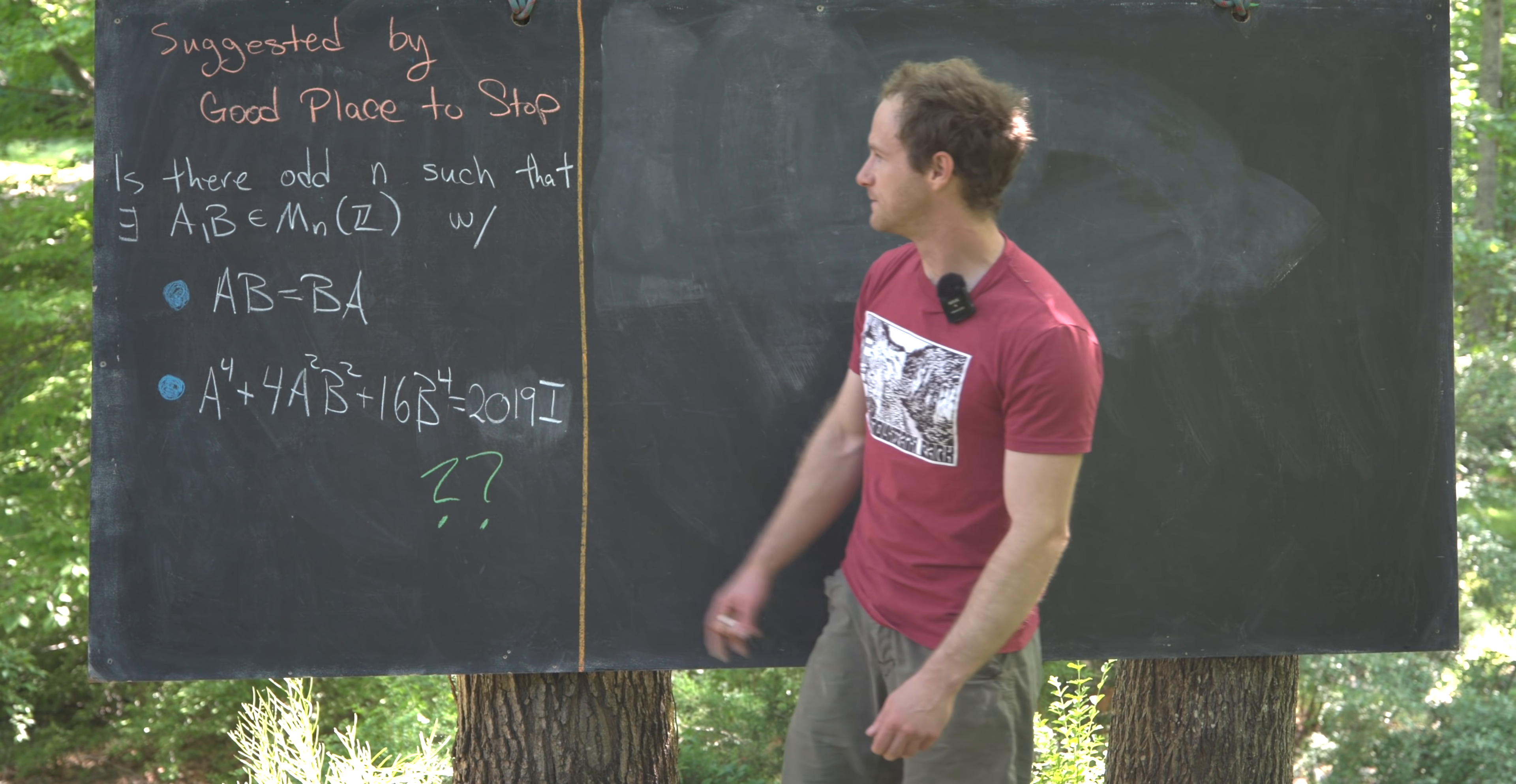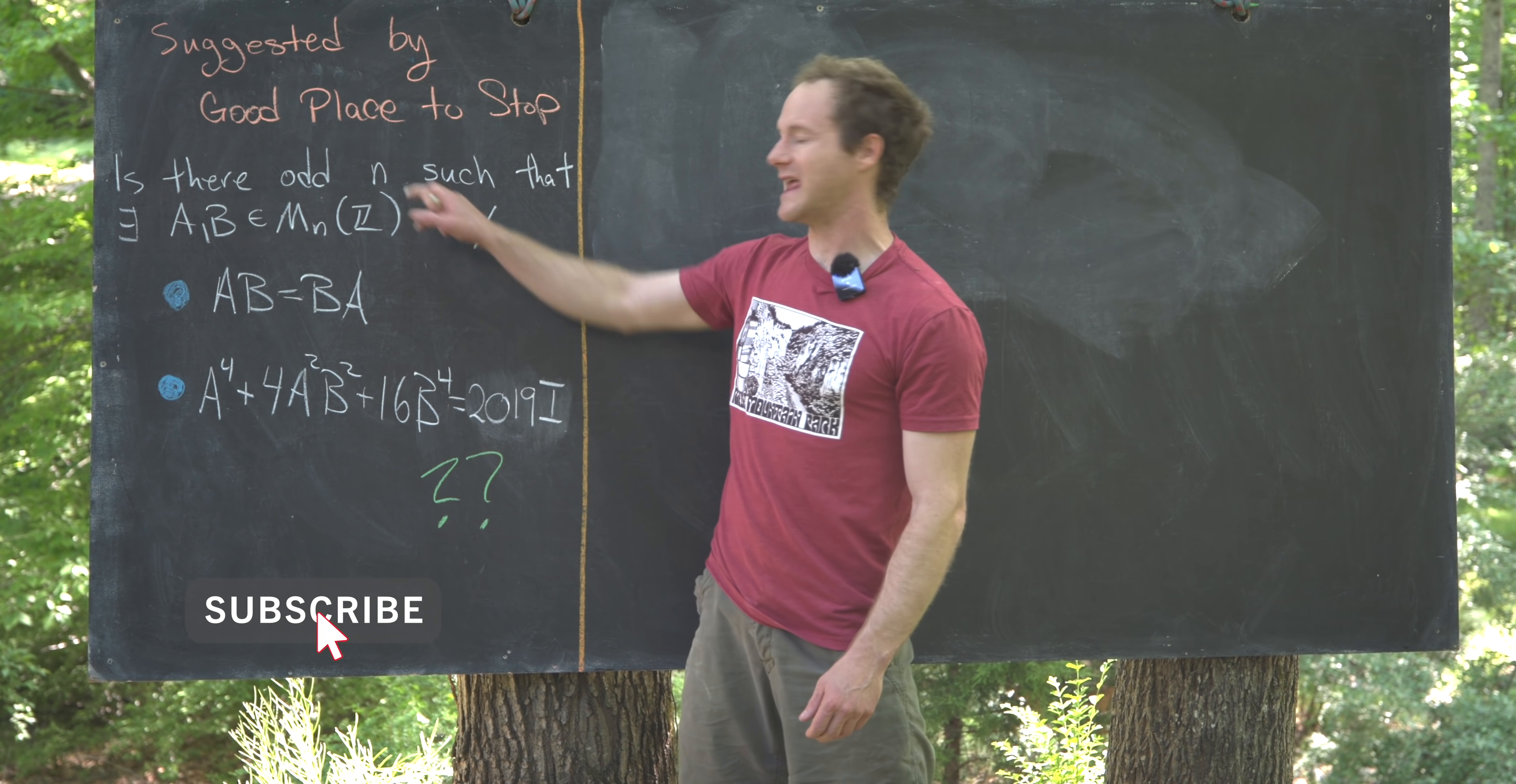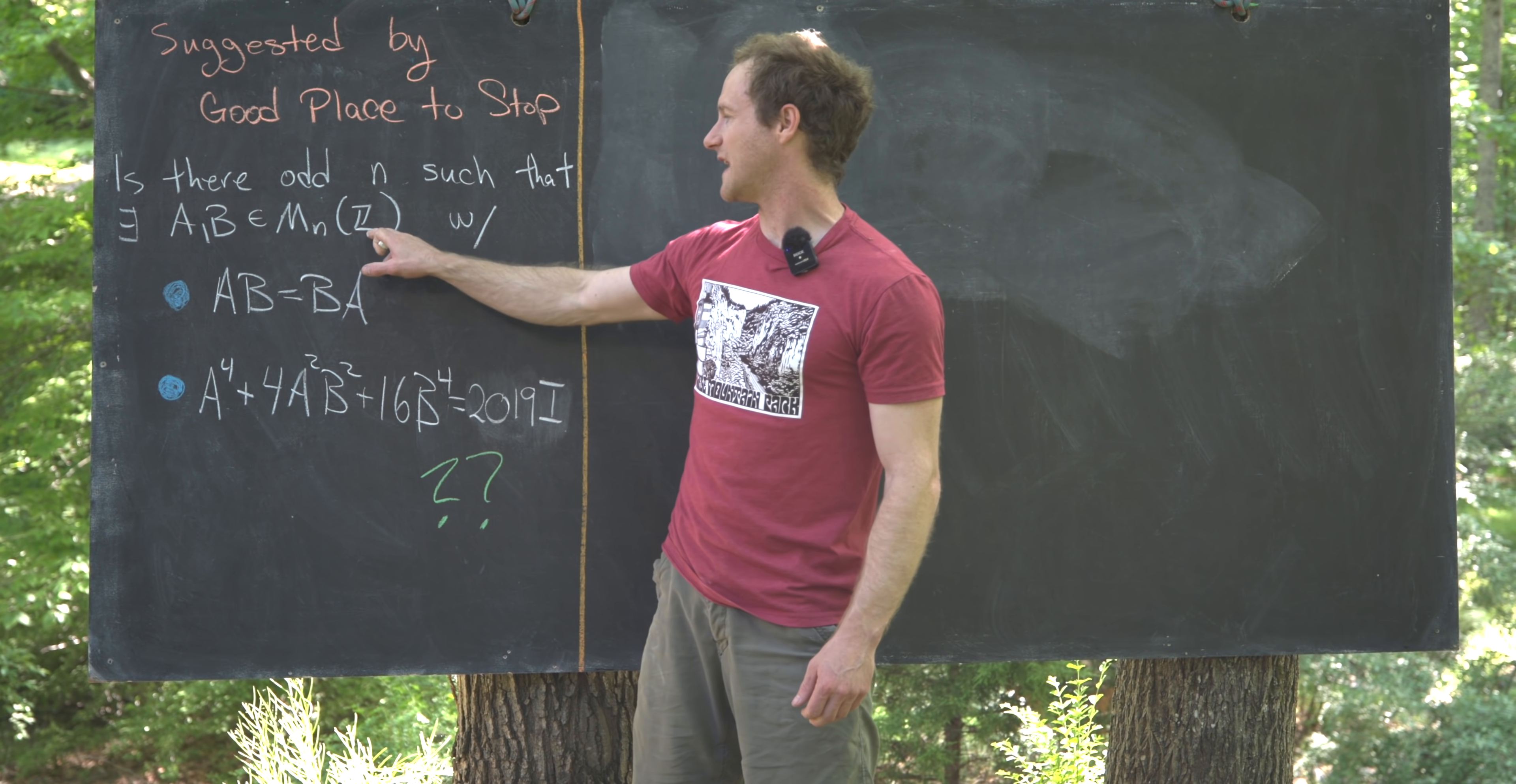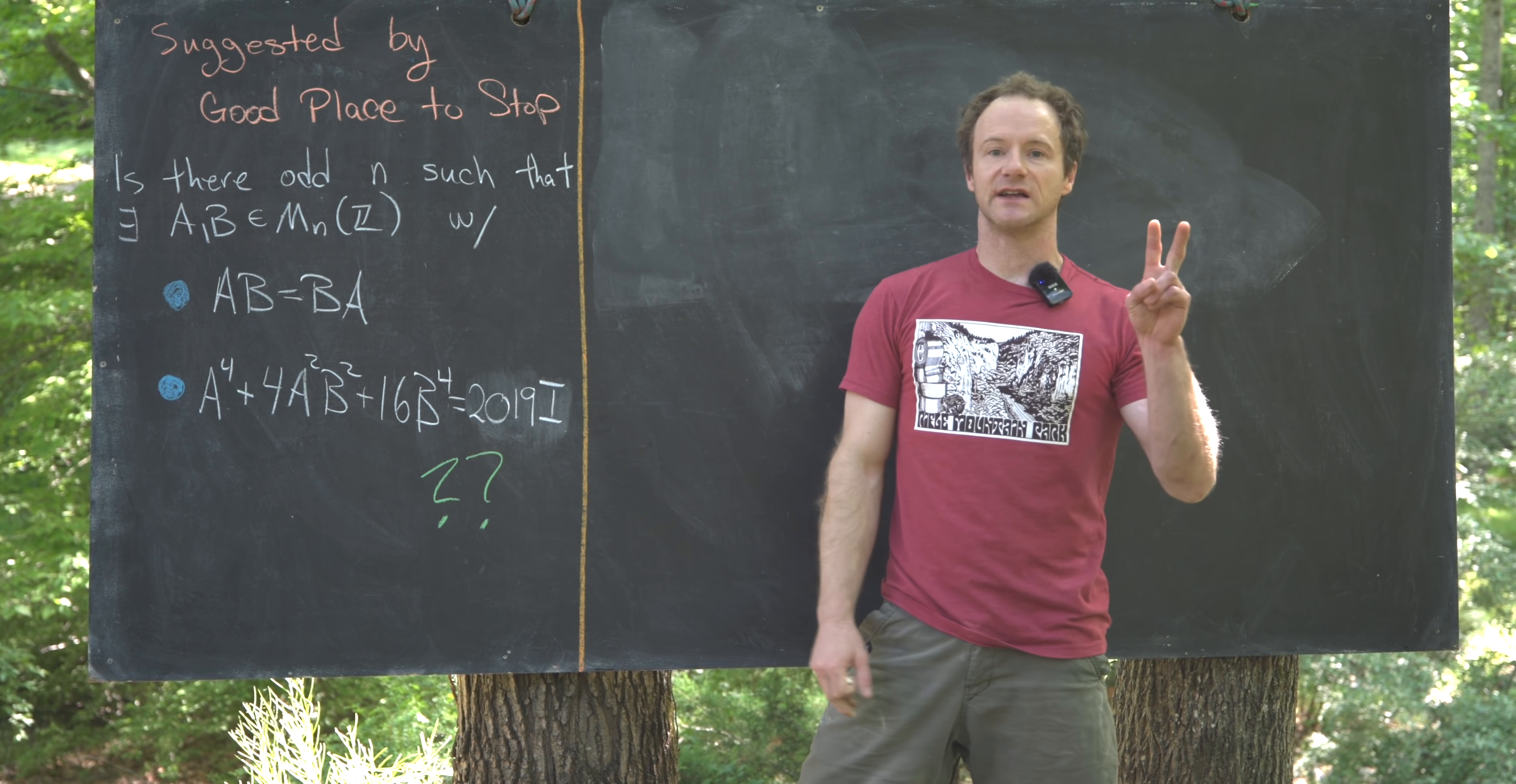Okay, let's look at the statement. So the question is, is there an odd integer n, and that's a positive integer, such that we have n-by-n matrices with integer entries, A and B,